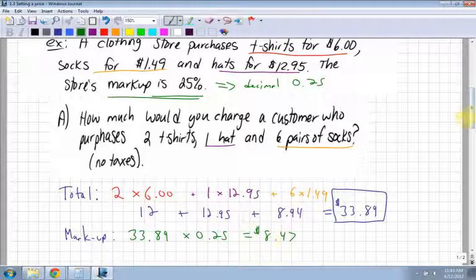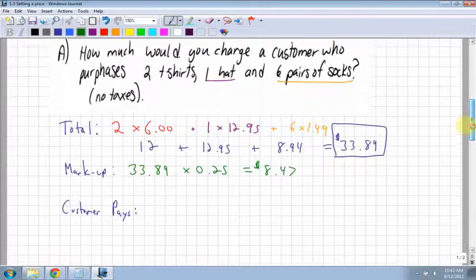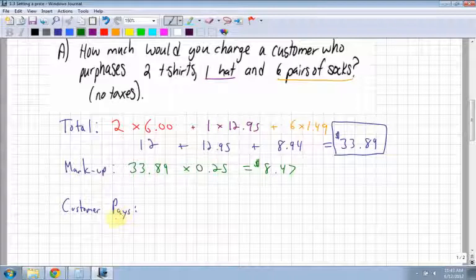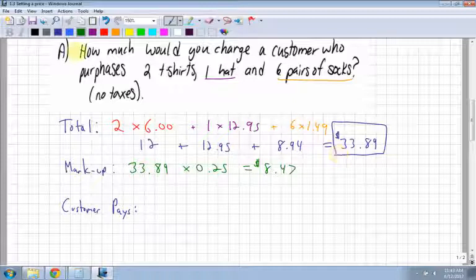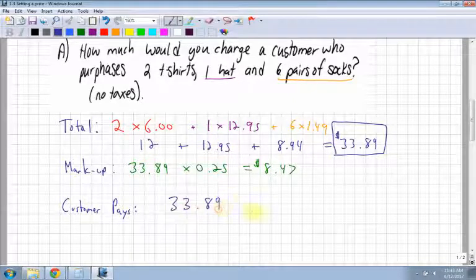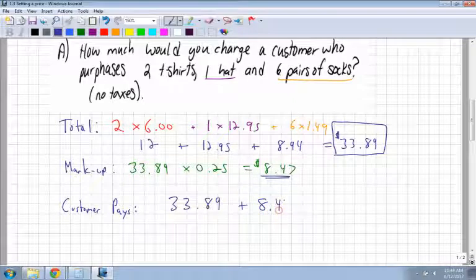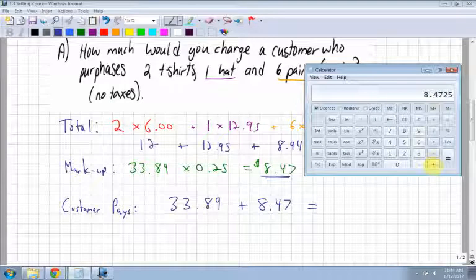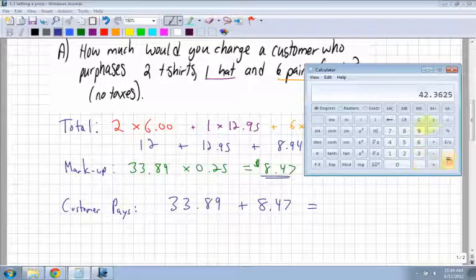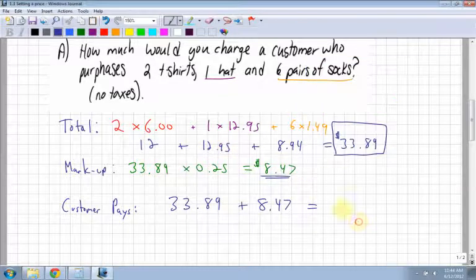What does the customer actually pay? He's going to pay the markup, but he's also going to pay the original price. The customer is going to pay 33.89 plus the markup of $8.47. $8.47 plus $33.89 is going to be $42.36.